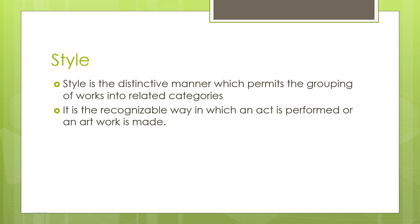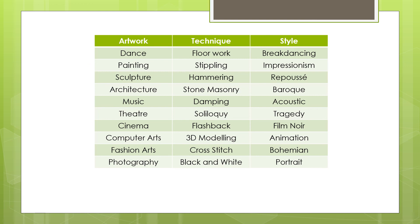Style is the distinctive manner which permits the grouping of works into related categories. It is the recognizable way in which an act is performed or an artwork is made. Here are examples of artworks, the techniques used, and the style produced by said technique. No technique is exclusive to a style — for example, floor work is not exclusive to breakdancing because floor work can also be used for tap dancing, the difference being how the floor is used for the dance. This is also applicable for all other techniques and styles in the other artworks.